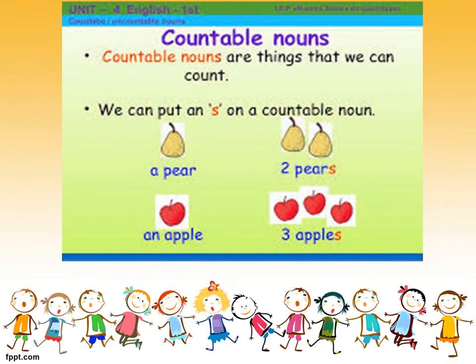As we said, countable nouns are things that we can count, and we can put an S on a countable noun. For example: a pear, two pears. An apple, three apples. Countable nouns are nouns we can count, and we can easily add S to form the plural.